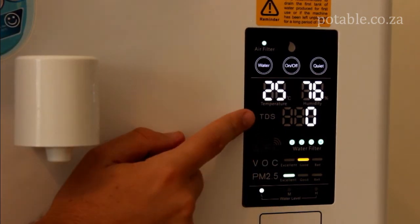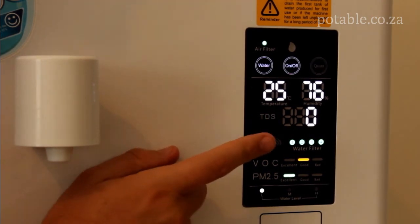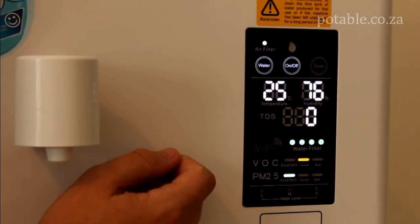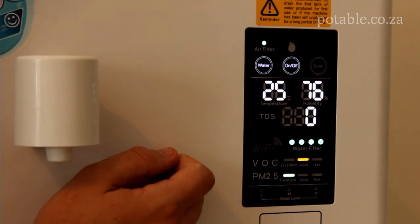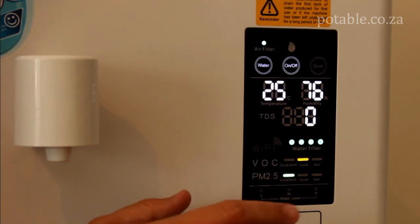Over here you will notice something that says TDS that stands for total dissolved solids. The less total dissolved solids you have in the water the better. Roughly 300 or lower.